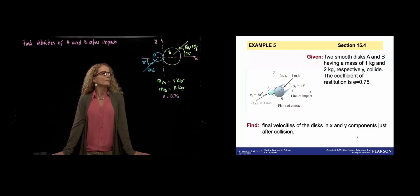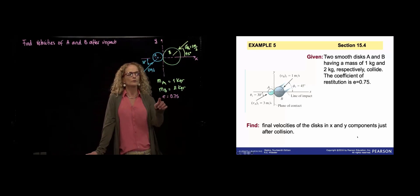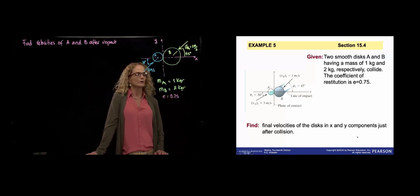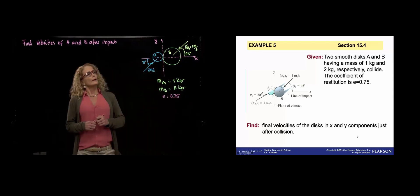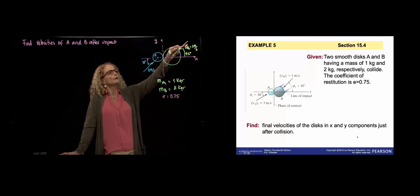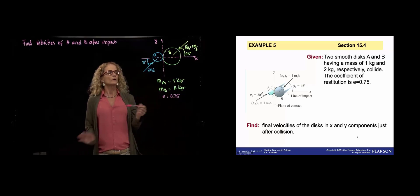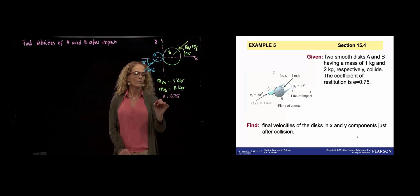Here we are talking about impact between two disks: disk A with a mass of one kilogram and disk B with a mass of two kilograms. The collision between those two disks is described with a coefficient of restitution equal to 0.75. They give us a velocity of A which is 3 meters per second and a velocity of B of 1 meter per second. Those velocities are not aligned, so we are talking about an oblique impact.